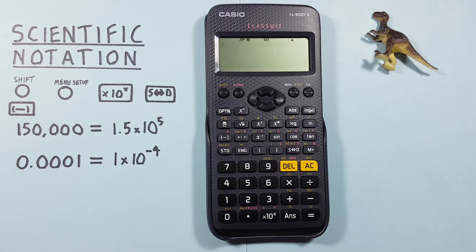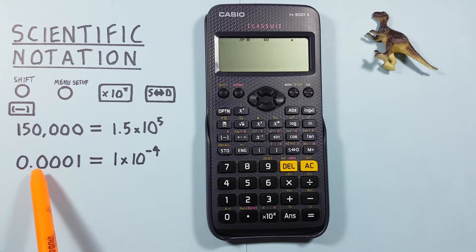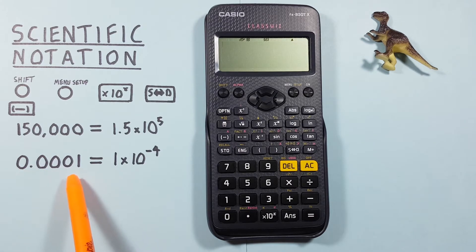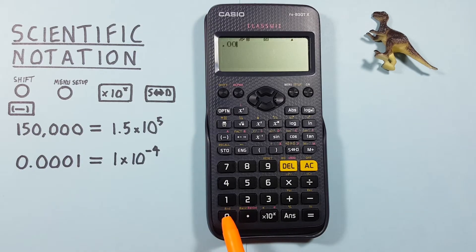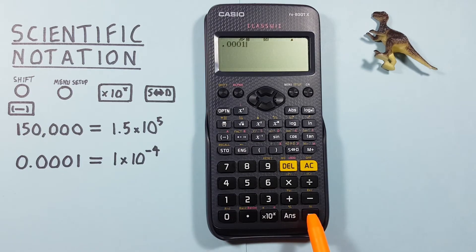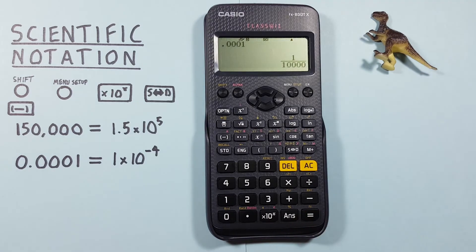This also works for very small numbers. Let's say we had 0.0001 and wanted to convert it to scientific notation. To do that, we can just enter that number on our screen and press equals while in scientific notation mode.